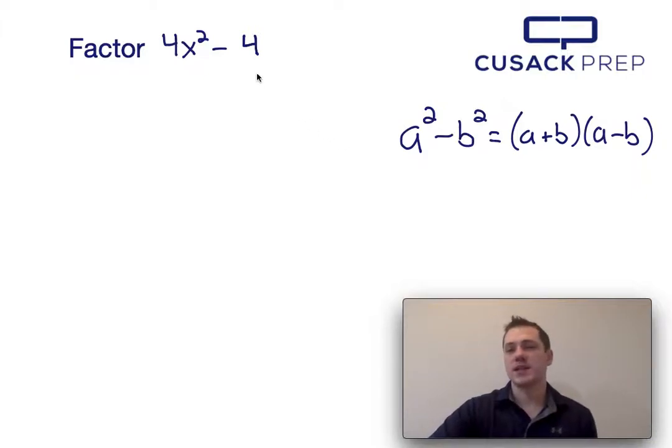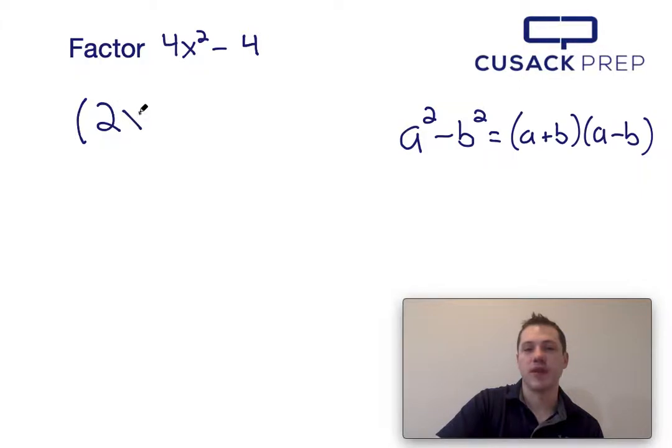So if a squared is 4x squared, then a would be the square root of that, which would just be 2x. If b squared is 4, then b would just be the square root of that, which is 2.